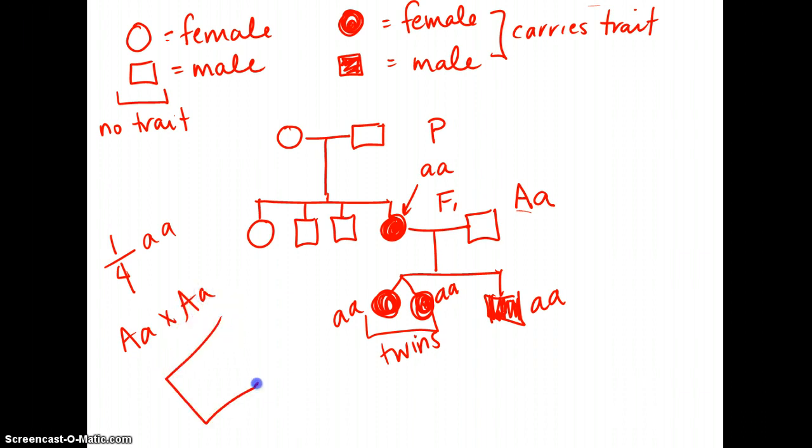if I have this P1 generation, this generation right here, being big A, little a, and big A, little a, does it give me a three to one ratio in terms of phenotype? And the answer is, oh yeah, it does. So that would make sense. I have three individuals that don't show the trait because they're showing the dominant and one individual that does.